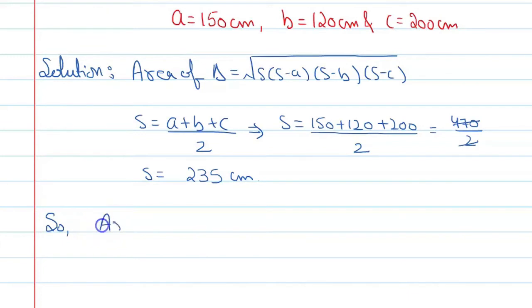So area is equal to under root 235, 235 minus 150, 235 minus 120, 235 minus 200.